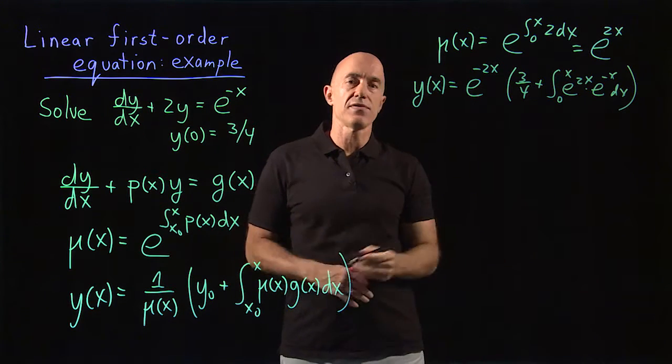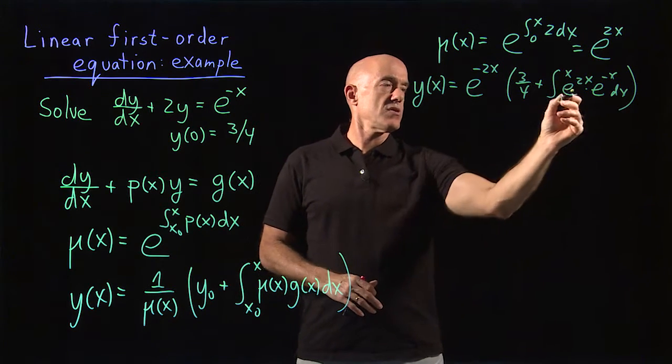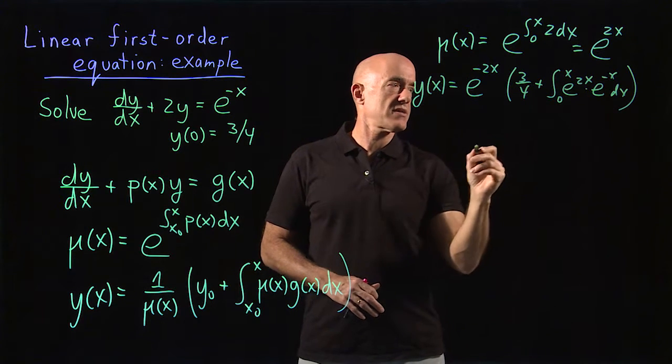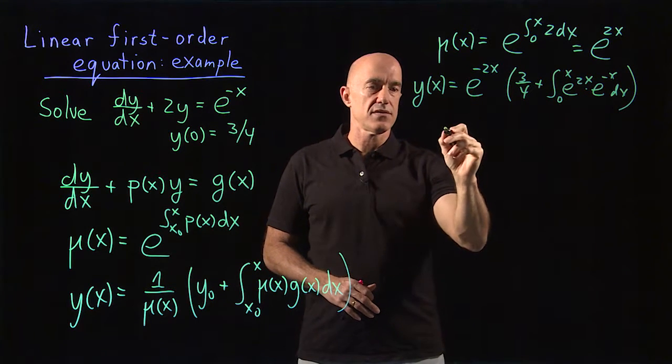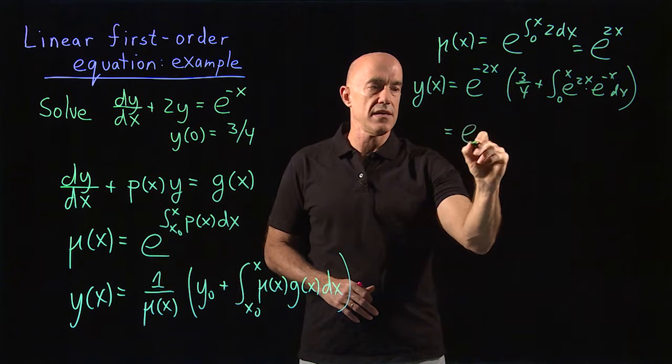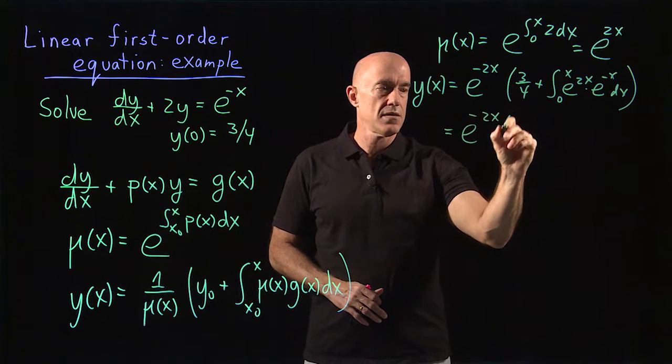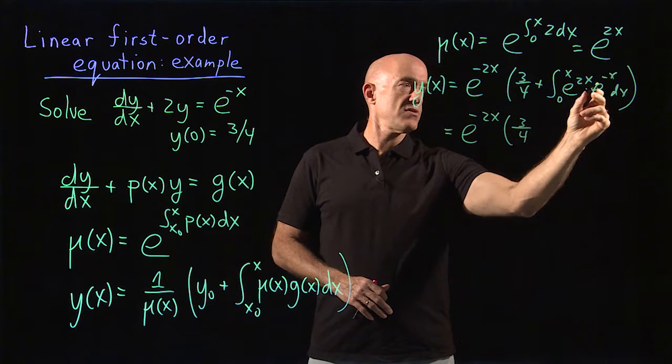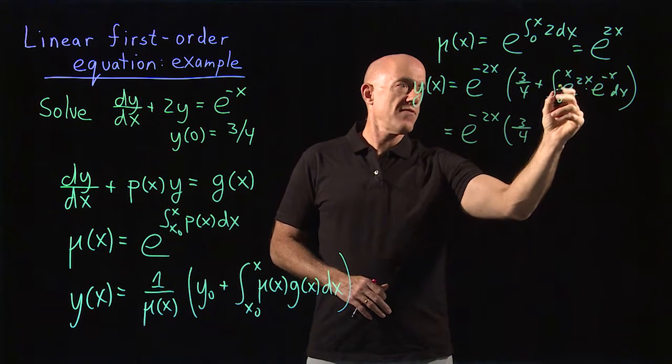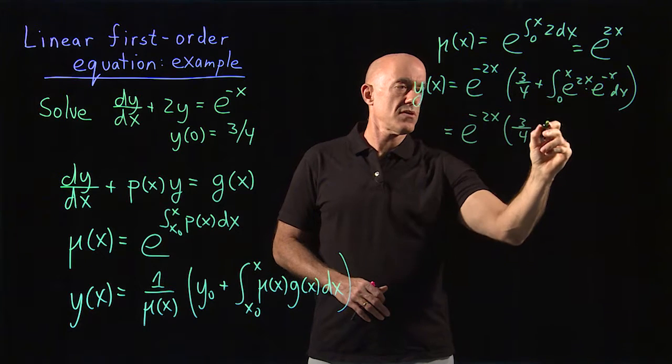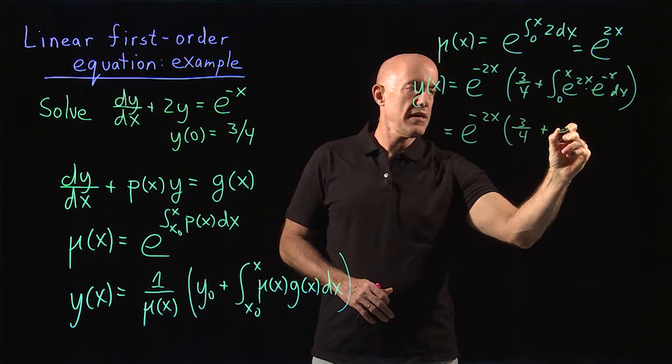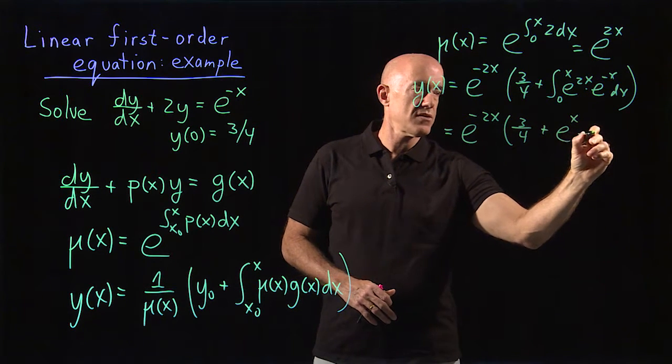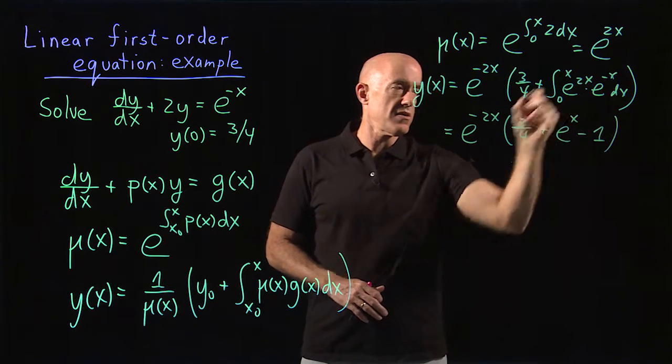And then we just have to do this integral. So this is e^x. The integral of e^x is quite easy. So this is e^(-2x) times 3/4. The integral is e^x from 0 to x, so that becomes plus e^x minus 1 from the lower limit of integration.